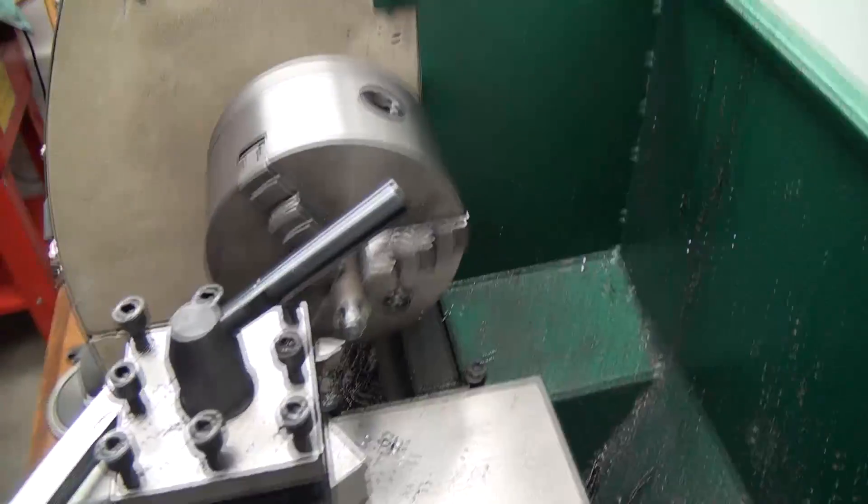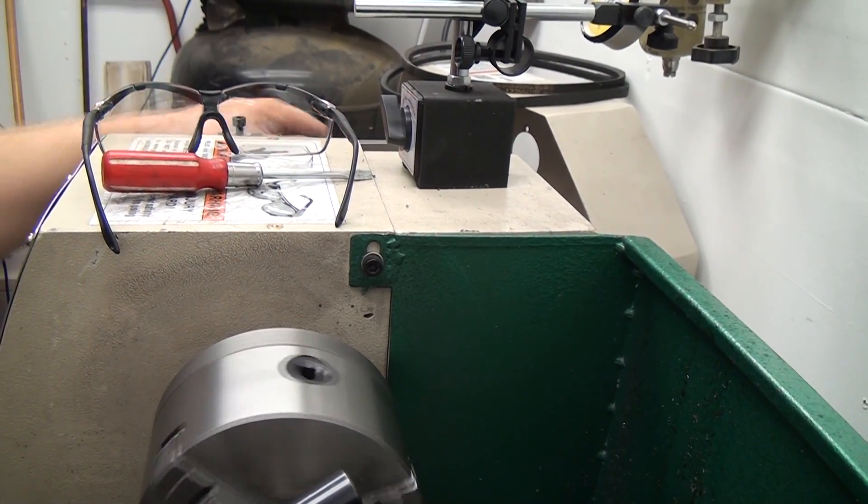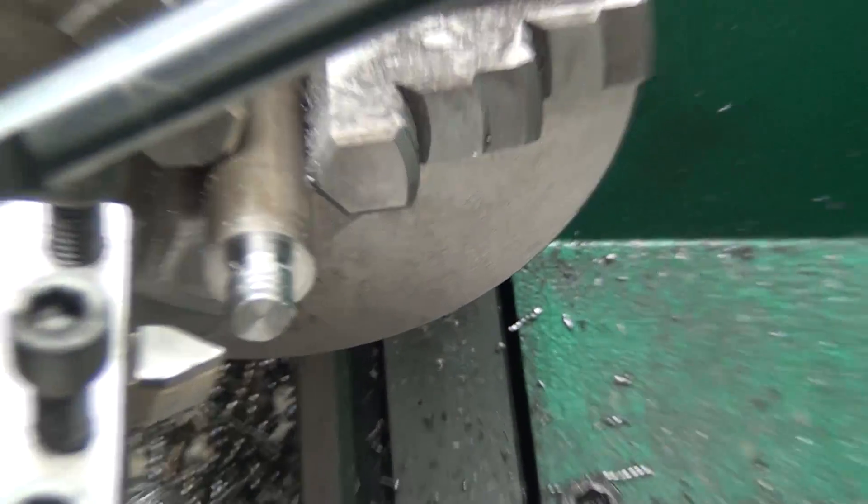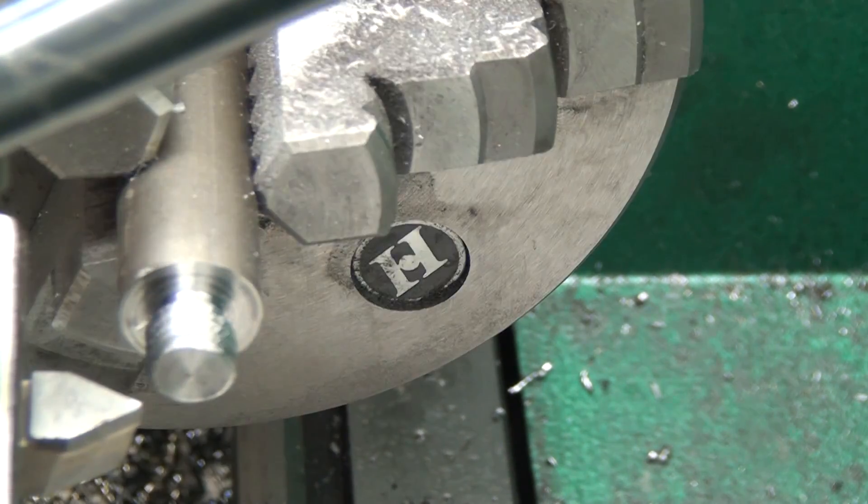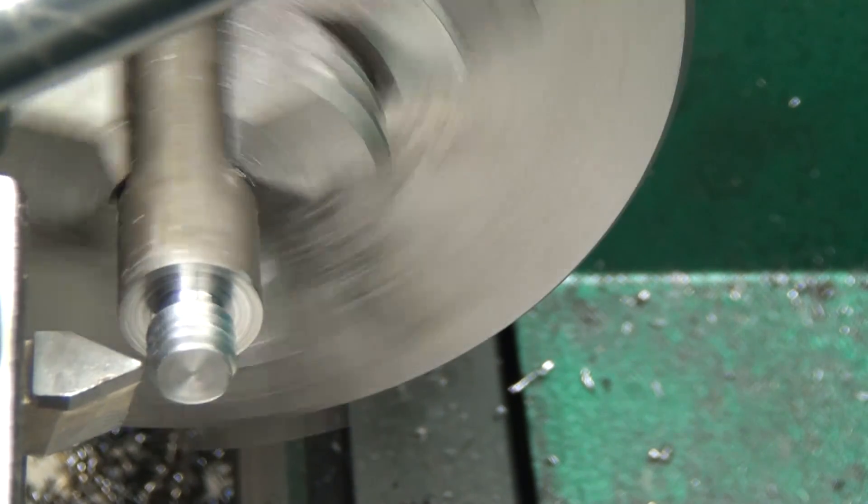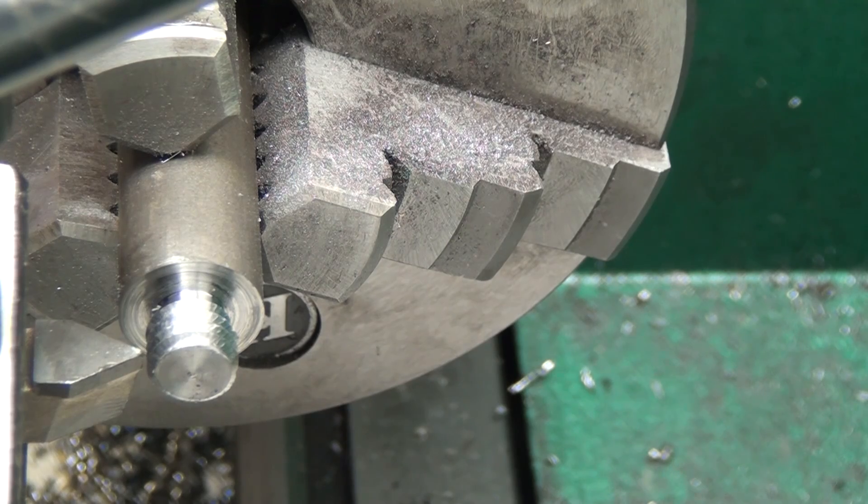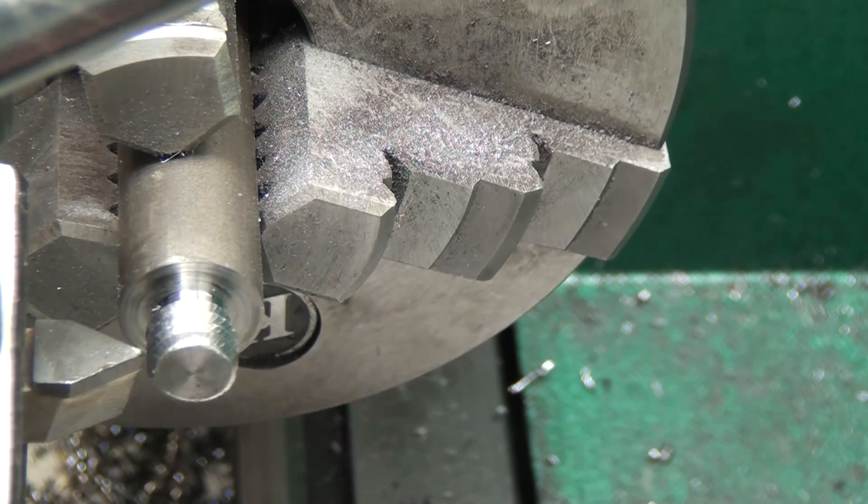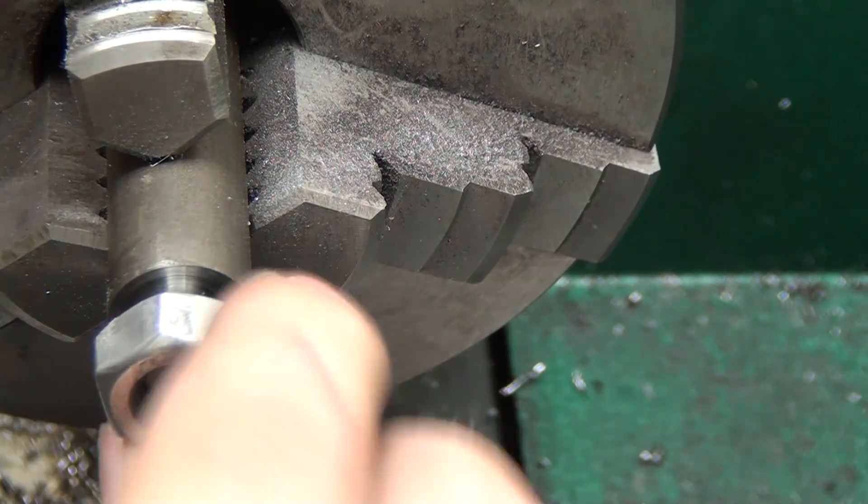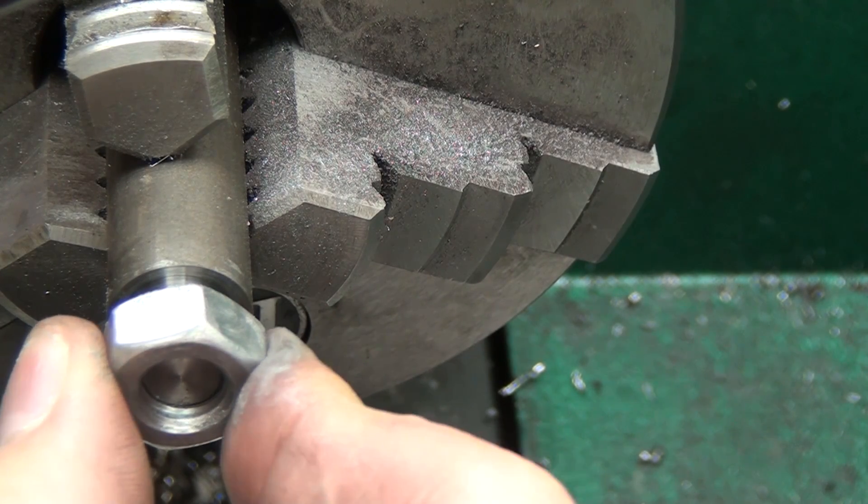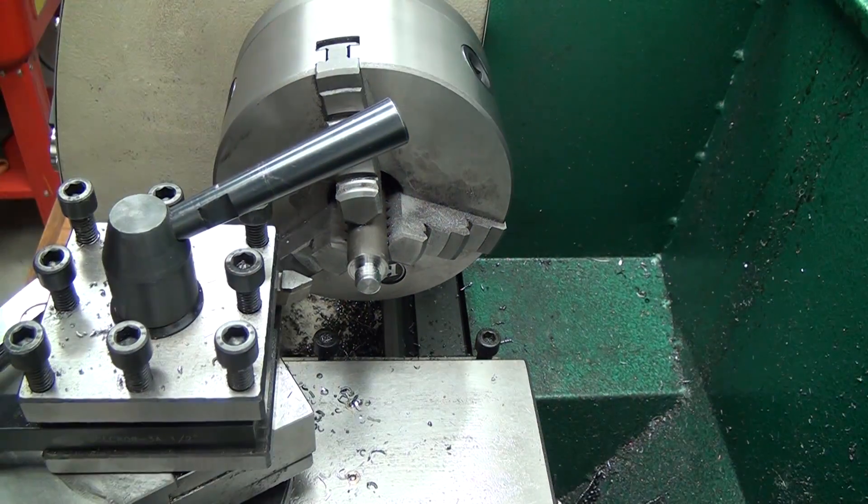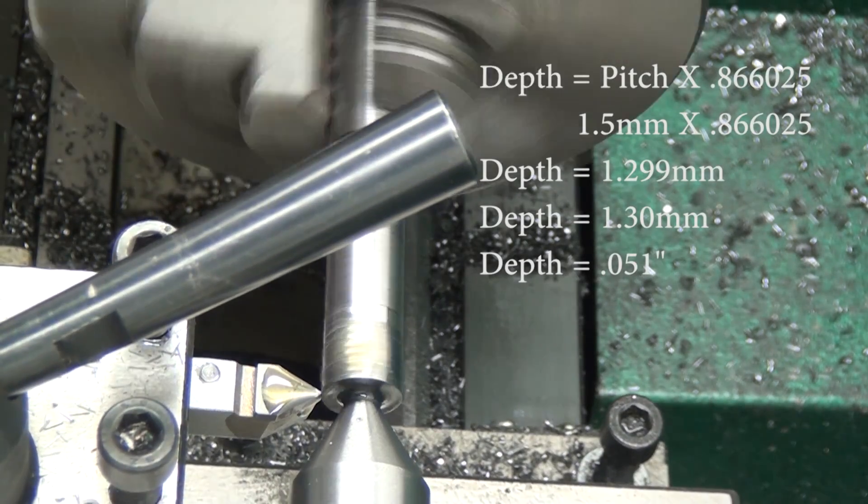I'm using a 3/8 carbide tipped brazed threading tool, and it's shimmed. I make this short thread by feeding by hand, and this is factor number two why I have failures. Feeding by hand results in uneven loads on the carbide cutting tool, and this is what breaks tools. Also notice how short my stick out is on the material—it still flexes, which also adds to the uneven loading on the carbide tip and breaks tools. Always use a dead center or live center if possible.